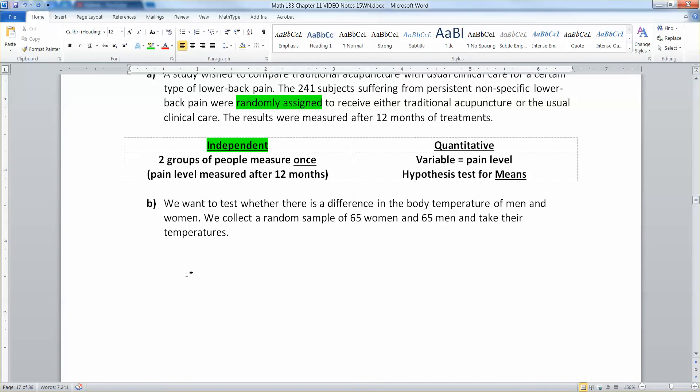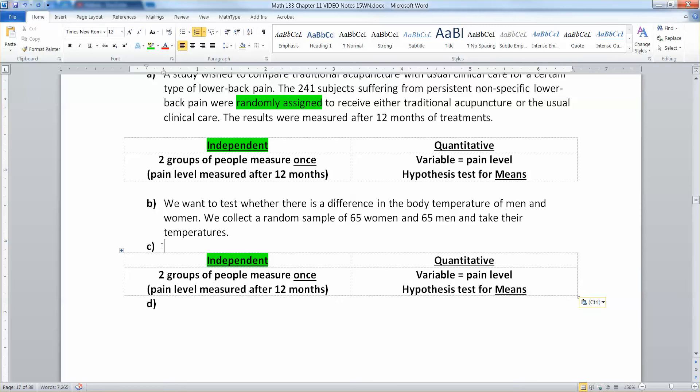Now what about we want to test whether there is a difference in the body temperature of men and women. We collect a random sample of 65 women and 65 men and take their temperatures. Well, again, that's very much independent. They're not husbands and wives. They're just men and women that don't have anything to do with each other. So it's two groups of people measured one time.